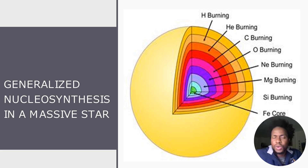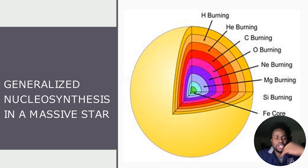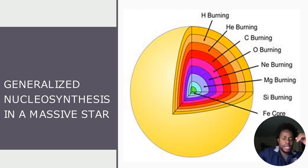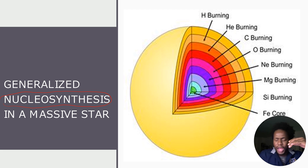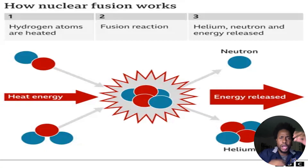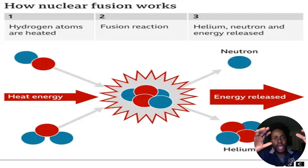Welcome to this video. We're going to be looking at your ESRT page number two, the bottom part, and discussing generalized nucleosynthesis in a massive star. This simply means the combination of nuclei to form another nucleus. Let's piggyback on star fusion — within a star, lighter element hydrogen is fused to create heavier element helium.